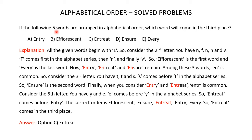If the following 5 words are arranged in alphabetical order, which word will come in the third place? You are given 5 words: Entry, Efflorescent, Entreat, Ensure, and Every. You have to arrange these 5 words in alphabetical order and find out which word will come in the third place. When you observe these 5 words, you will see that all the given words begin with E.